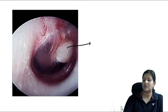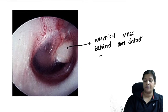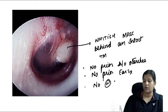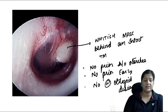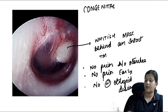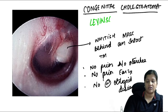This image shows a whitish mass behind an intact tympanic membrane with no prior history of otorrhoea, no ear surgery, and no positive otological disease. This is the Levinson's criteria for congenital cholesteatoma. The diagnosis is congenital cholesteatoma.